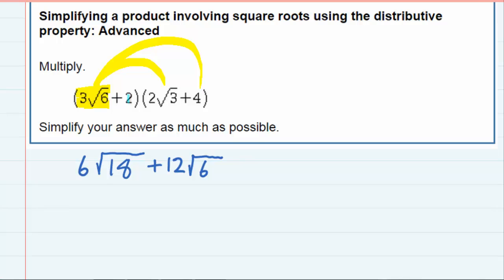Now I need to come back and multiply the two by both terms. So first two times the two square roots of three gives me two times two on the outside is four.